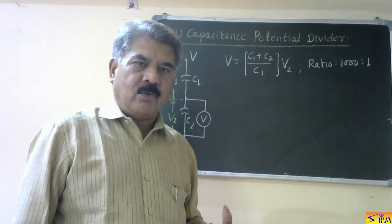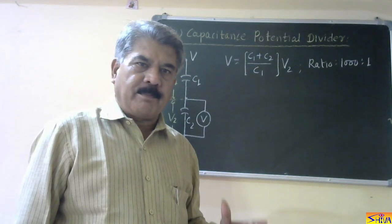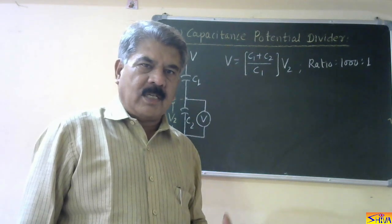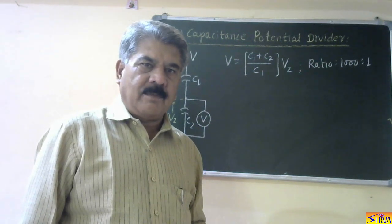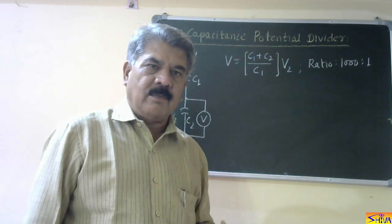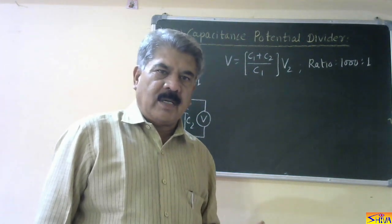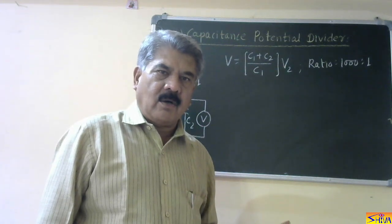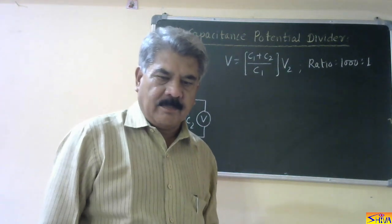Both the resistance potential divider and capacitance potential divider methods can be used for impulse voltage measurement. Now let us solve two numericals, one on each method.